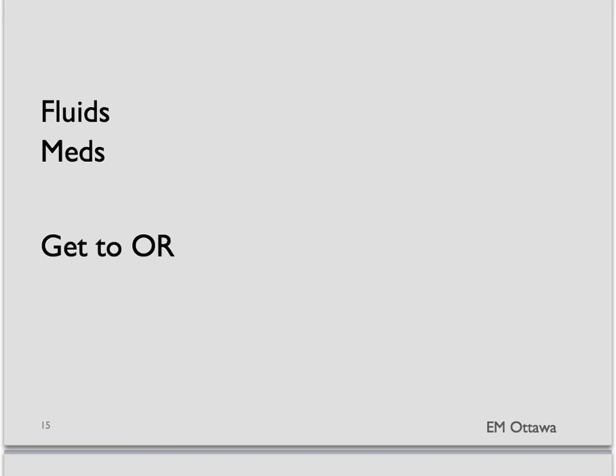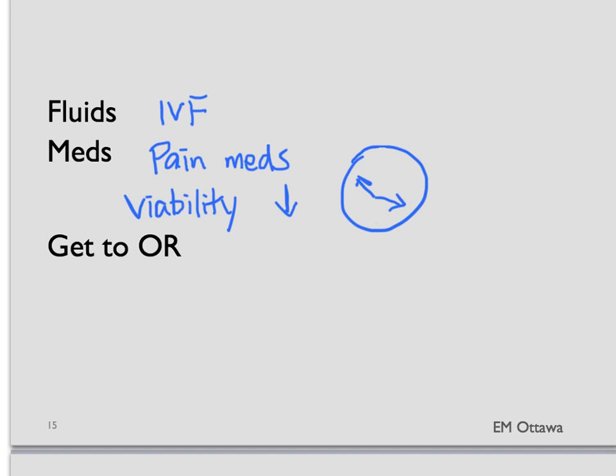Let's talk a little bit now about treatment. Patients with ovarian torsion often have significant pain. Our treatment, therefore, will focus on intravenous fluids to maintain their blood pressure and pain medications. Since the viability of the ovary decreases as ischemic time gets longer, our goal, once we think about the diagnosis, is to get the patient to the operating room for detortion of the ovary as soon as possible.